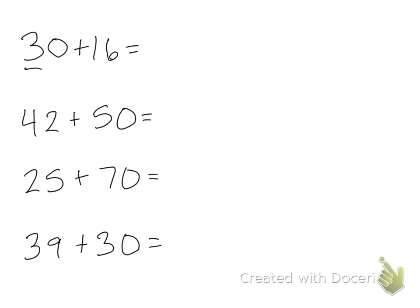So if 30 plus 10 is 40, then what's 6 more? 46. So 30 plus 10 was 40 and then there's 6 more.